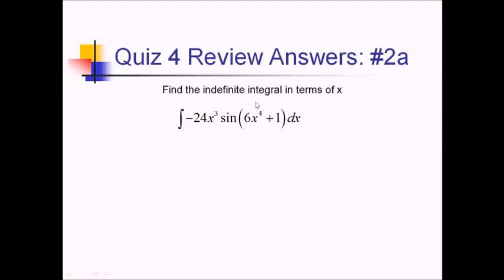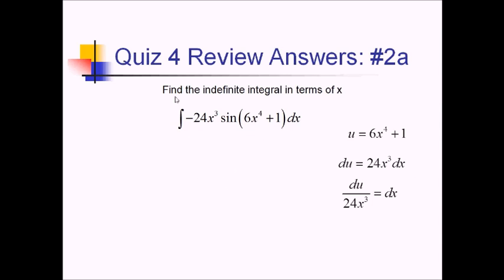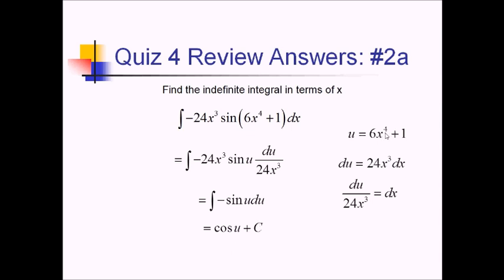For this problem, I'm trying to find the indefinite integral of this expression in terms of x. Since I have an inner function and its derivative is elsewhere in the problem, I'm going to use u substitution. I'll let u equal 6x to the fourth plus 1. Taking my derivative, du equals 24x cubed dx. Isolating dx by dividing both sides by 24x cubed. Since this is an indefinite integral, I can go straight to replacing stuff with u's. We've got negative 24x cubed times the sine of u times du over 24x cubed. The 24x cubeds cancel, leaving just negative sine of u du. The antiderivative of negative sine is positive cosine of u plus C. Replacing u with 6x to the fourth plus 1 to get the answer in terms of x, and it's done.